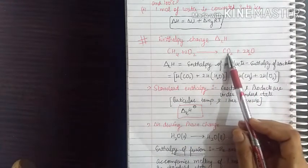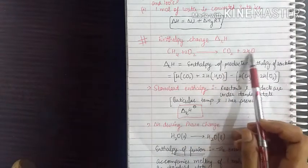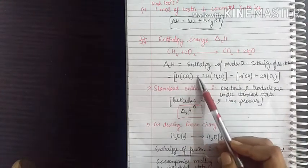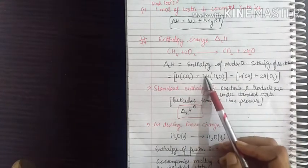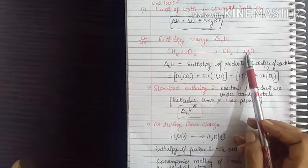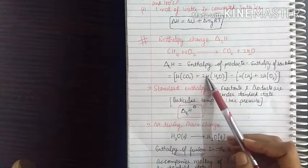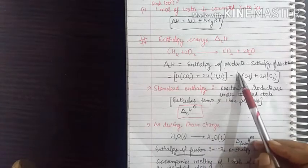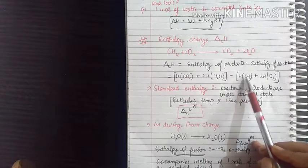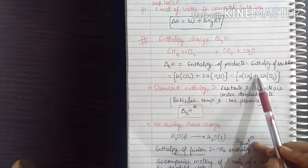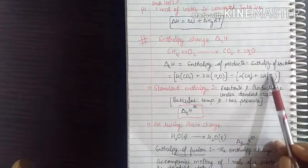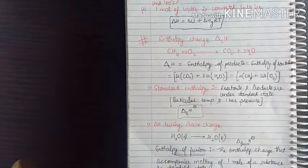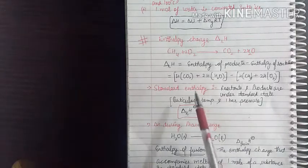The products are carbon dioxide and water. So we write: enthalpy of CO₂ plus 2 times the enthalpy of H₂O, because the coefficient is 2. Then we subtract the reactants: enthalpy of CH₄ plus 2 multiplied by the enthalpy of O₂. You can substitute all the values.